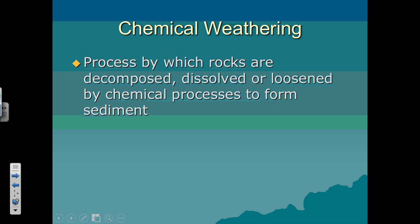The other type is chemical weathering. Chemical weathering happens in two main places: in the ocean, and in caves, where limestone is eaten away and transported by water to different areas.